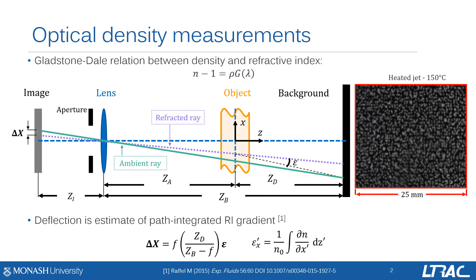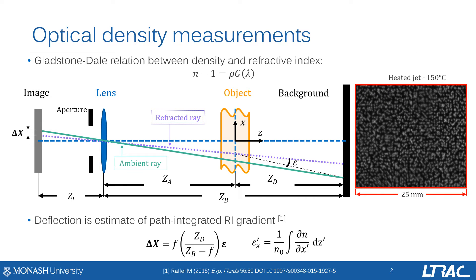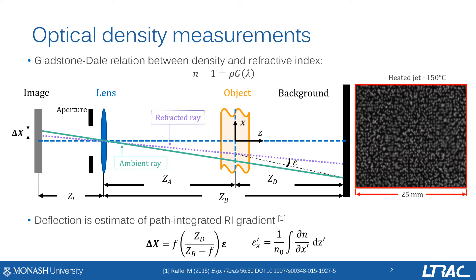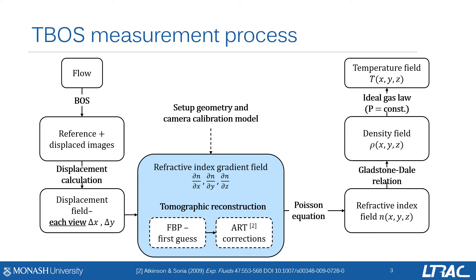By placing multiple cameras around the flow, a tomographic reconstruction of the instantaneous three-dimensional refractive index gradients can be performed based on the path-integrated information from the cameras. We can summarize the TBOS measurement process like so.